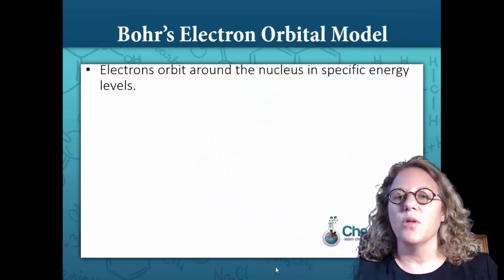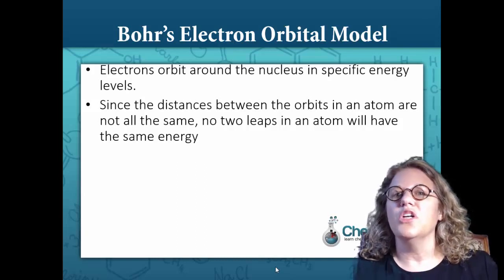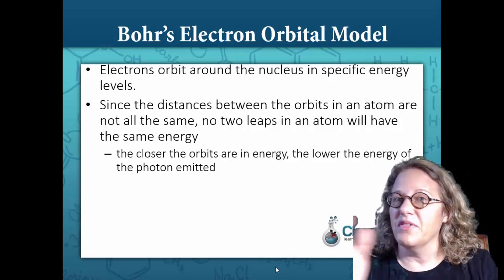So Bohr's electron orbital model is electrons orbit around the nucleus in specific energy levels. Since the distances between the orbits in an atom are not all the same, no two leaps in an atom will have the same energy.